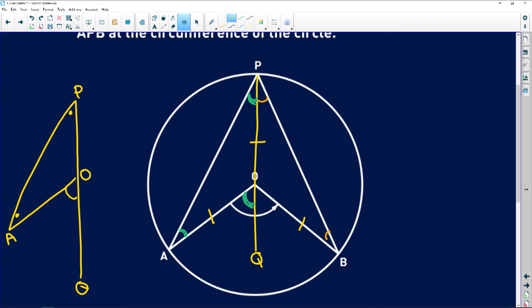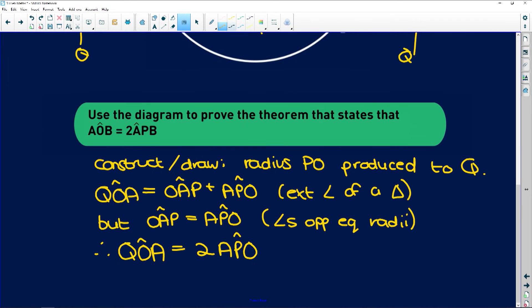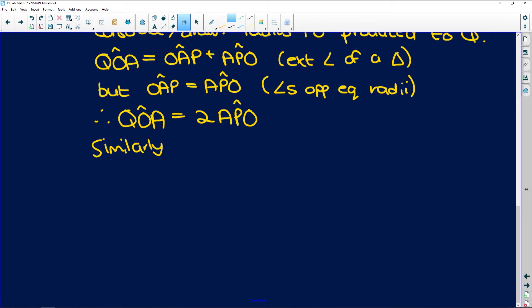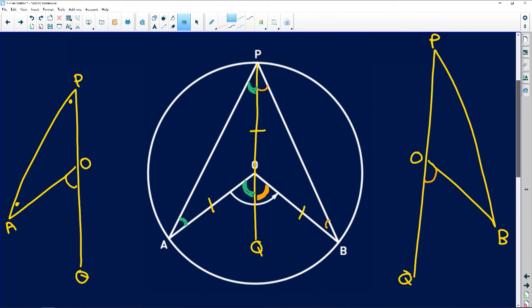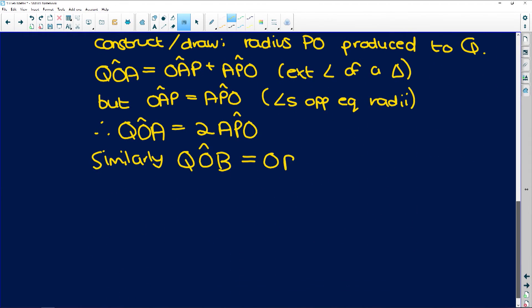So now we do the same thing for the left hand side or the right hand side. P, B, this is O at the centre and this is Q that we've extended to. This angle over here, QOB is equal to OPB. Similarly, QOB, which is the angle outside the triangle, is equal to OPB plus PBO, exterior angle of triangle.